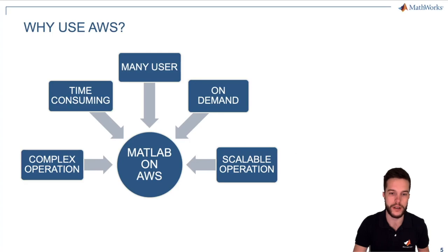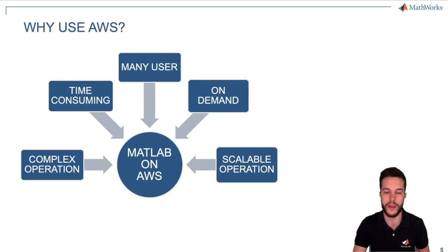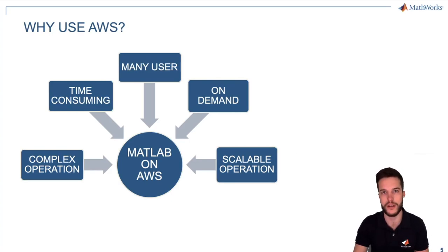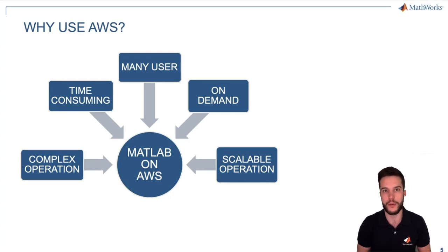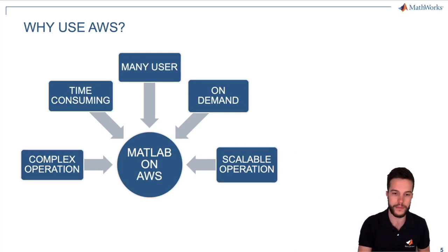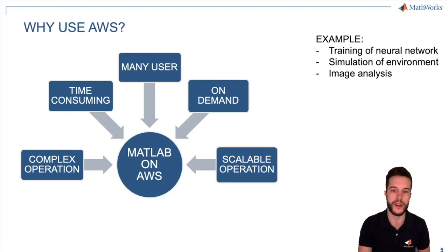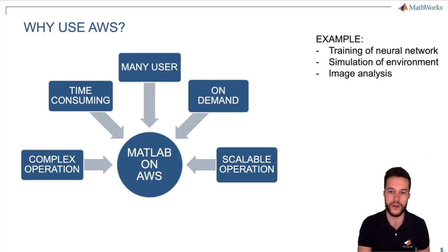In particular, MATLAB on Amazon Web Service is on demand, so you don't need to buy anything — you pay as you use it, and it is very scalable. You can select the machine, or the machines, because you can also create a cloud of machines, based on the performance you need in that specific task. For example, it could be training a neural network, simulating a very complex environment, physics, and so on.